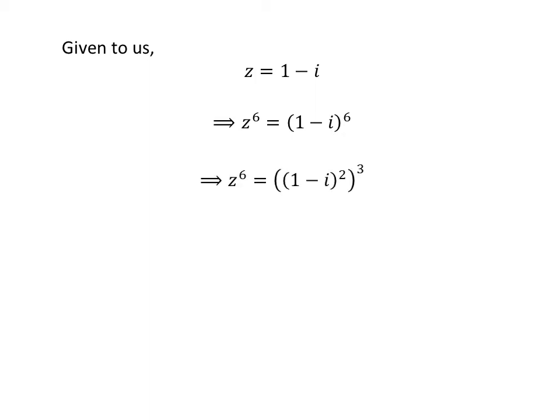We can rewrite the above statement as z raised to the power of 6 is equal to square of 1 minus i raised to the power of 3, as 2 times 3 is 6. Expansion of square of 1 minus i is equal to square of 1 plus square of i minus 2 times 1 times i, so z raised to the power of 6 is equal to cube of square of 1 plus square of i minus 2 times 1 times i.